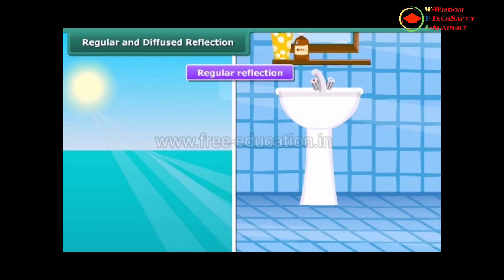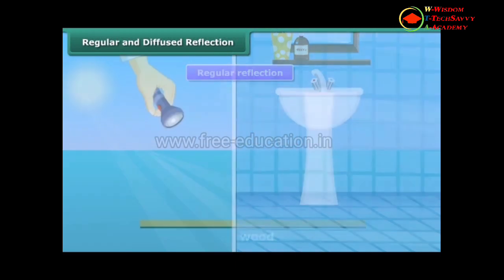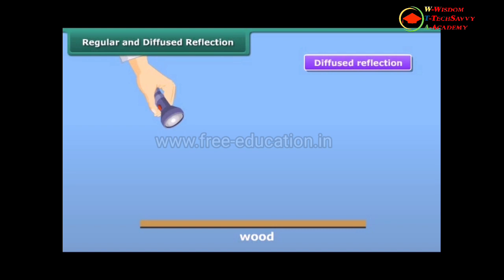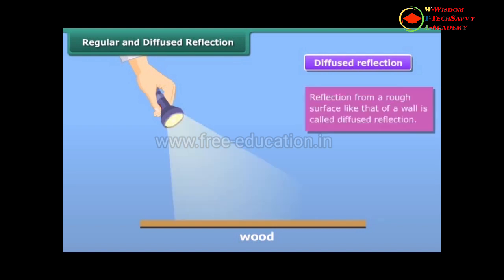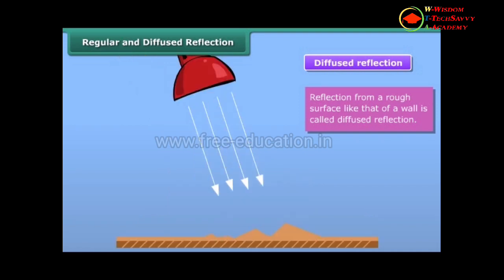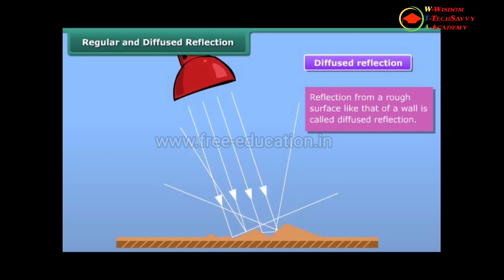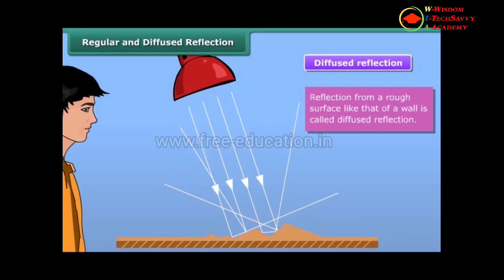Diffused or irregular reflection takes place when a ray of light is incident on a surface such as a wall or wood, which is not smooth or polished. An image is not formed in this case. The different portions of the surface reflect the incident light in different directions. The light sent to our eyes by most of the objects we see around us is due to the diffused reflection from their surfaces.